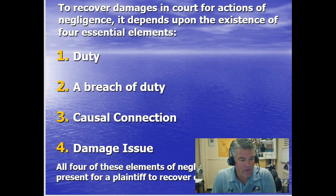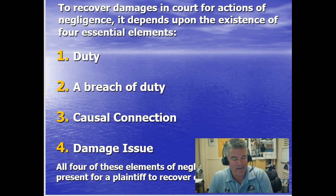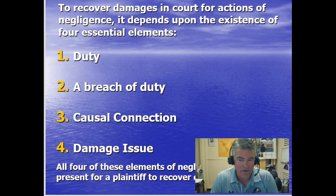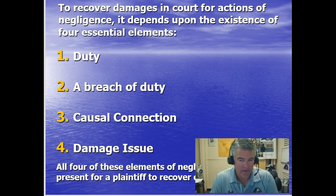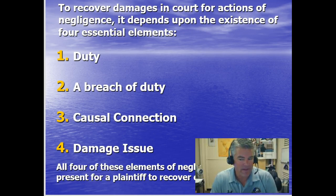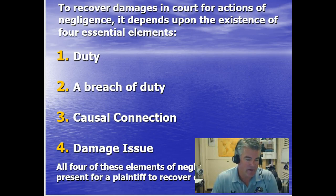The fourth element is damage. There needs to be an actual loss or damage — a legally recognizable injury. It must be shown that an actual loss, harm, or injury did occur. All four of these elements of negligence must be present for a plaintiff to recover damages.